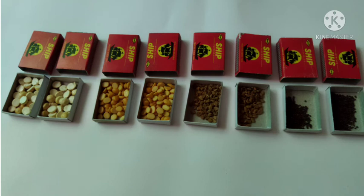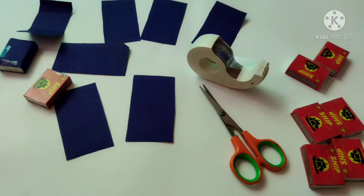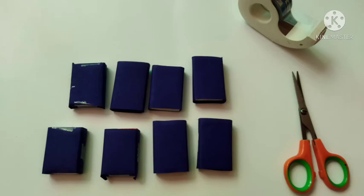I have taken a few empty matchboxes and I have filled them with mustard, methi and few grams in each of the boxes. I have sealed them with cellophane tape and wrapped with the color paper which is available in my home. So I have used the spices from kitchen and few color papers to make this material.